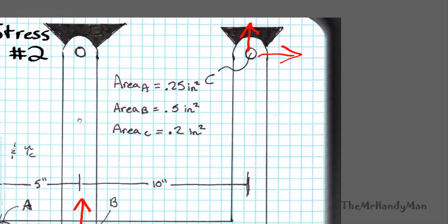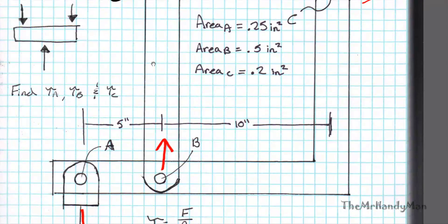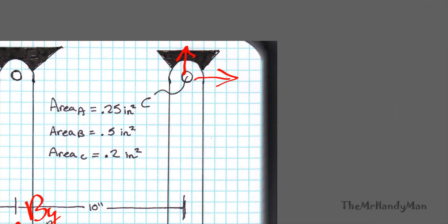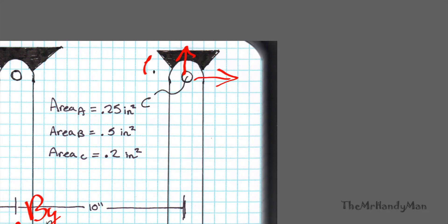So we could name those forces. We could name that force A, force By, which we can do. We'll just do it real quick: By. And then as you come up here, this would be Cy and then Cx.